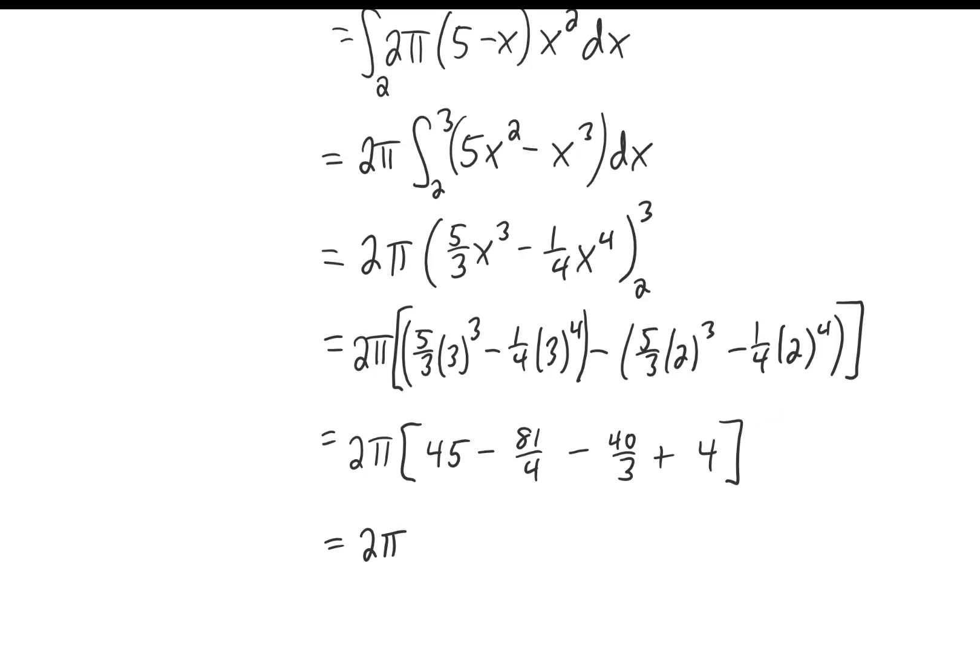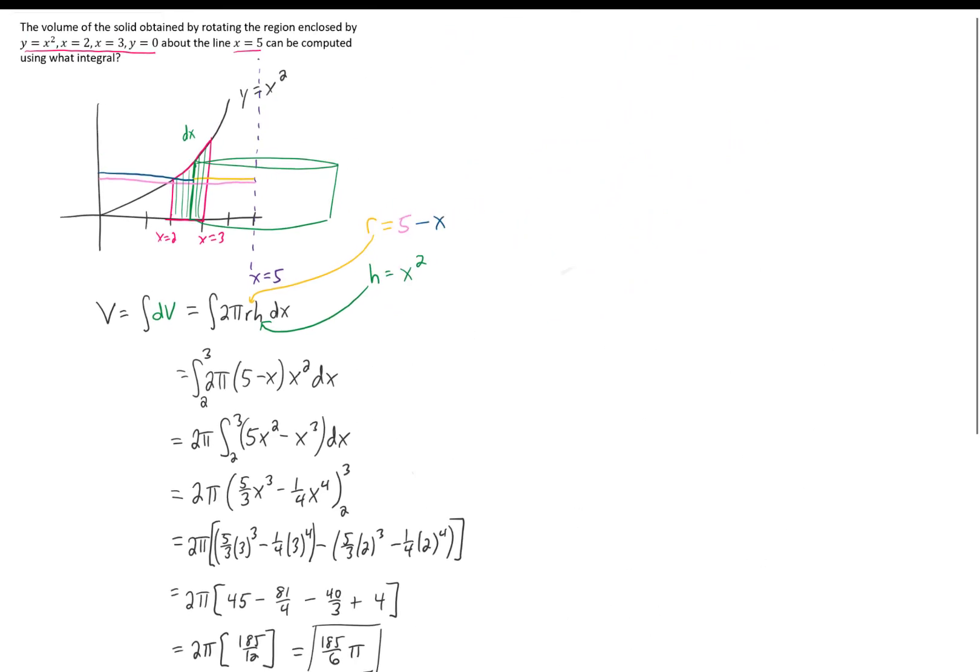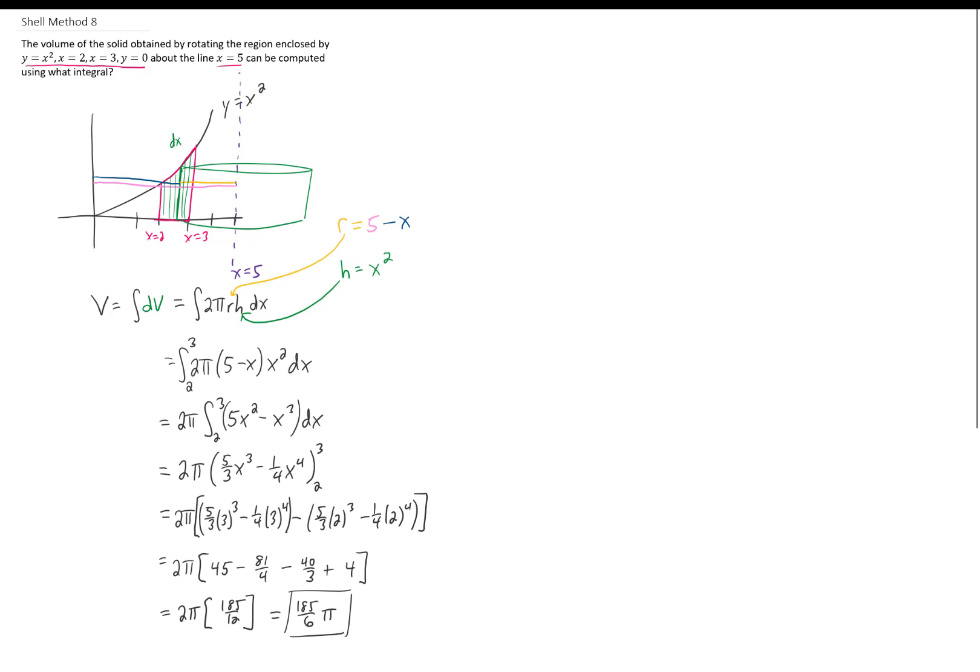Combining all these fractions in the parentheses gives us 185 twelfths, which we can then multiply by two pi to get 185 sixths pi. That is the volume, so it's going to be in units cubed. And that is the final answer to this problem. Let's take a look at the whole thing here. Cool, I hope that helps.